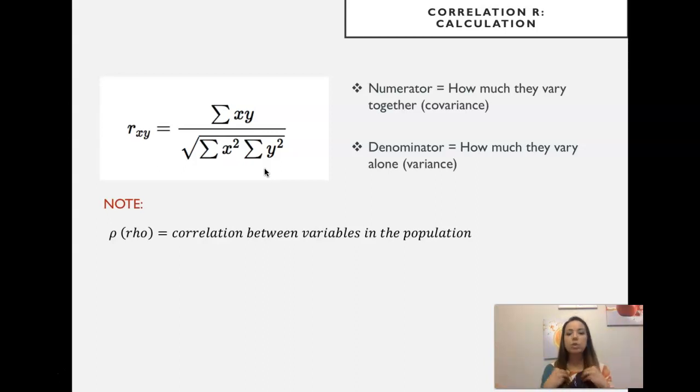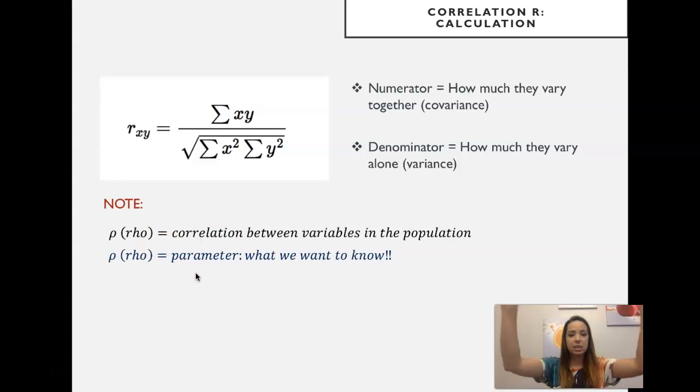But we don't have access to all the data in every single county, everywhere. So we have a sample of that data, sample of that population. What we want to know is the correlation between variables in the population. So we want to know rho, which is the name for the parameter, the true value of the correlation in the population.